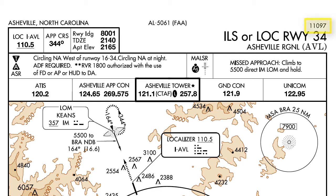In the far upper right corner we have the Julian date of the amendment of this approach. In this case it was 2011 on the 97th day. Finally at the top is the FAA's computer designation for this approach. When the FAA goes to find this approach in its database it'll use the number 5061.